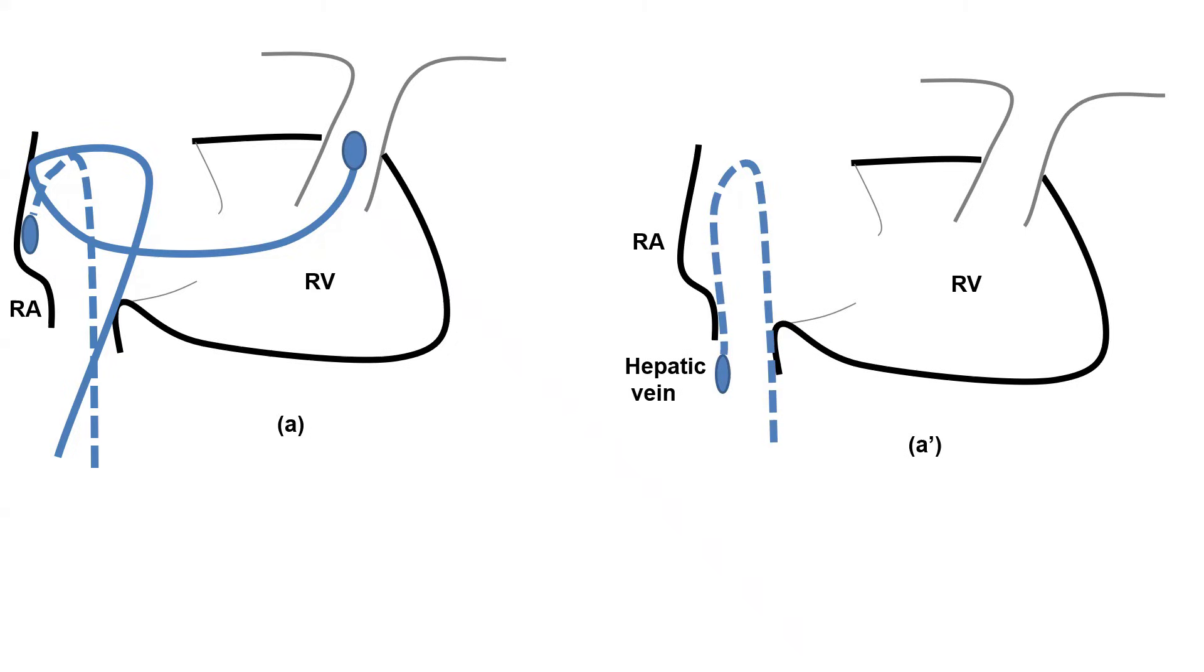So the first technique from a femoral access is to advance the catheter and try to hook the tip at the lateral RA wall. Then as it hooks the lateral RA wall, you keep pushing it until it loops and goes into the PA.